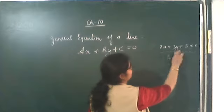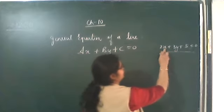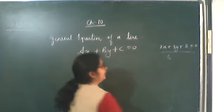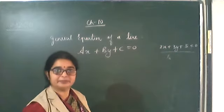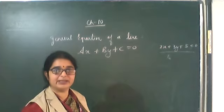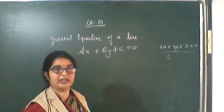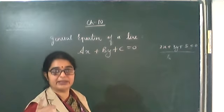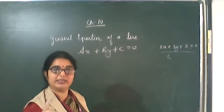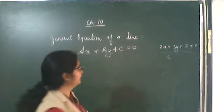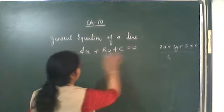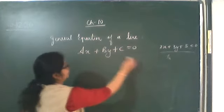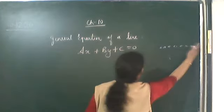This is a linear equation of two variables. Why is it linear? Because the power of both x and y variables is 1. So this is the general form of the equation of a line.